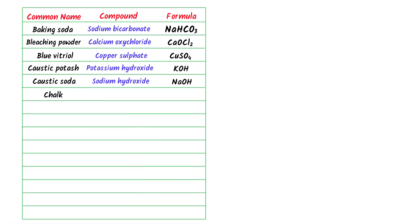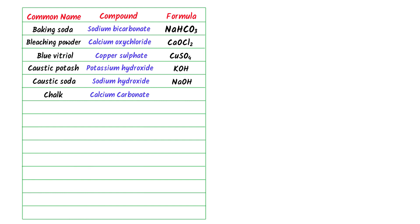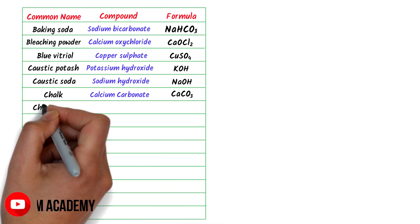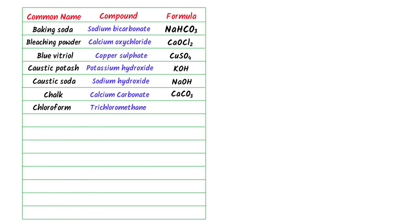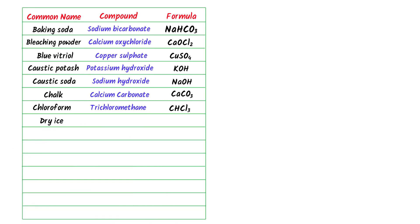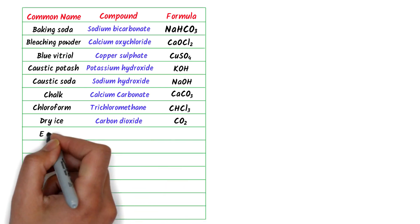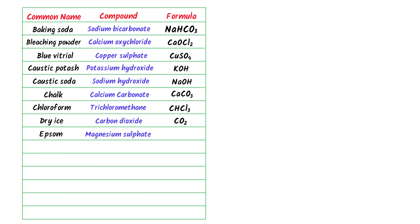The sixth is chalk — it is calcium carbonate and its chemical formula is CaCO3. The seventh is chloroform — it is trichloromethane and its chemical formula is CHCl3. The eighth is dry ice — it is solid carbon dioxide and its chemical formula is CO2. The ninth is Epsom salt — it is magnesium sulfate and its chemical formula is MgSO4.